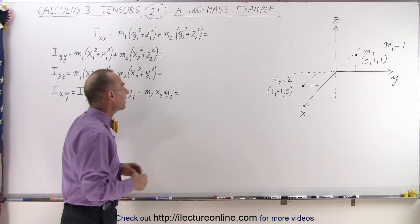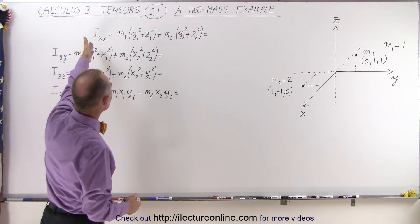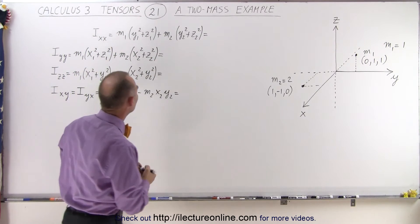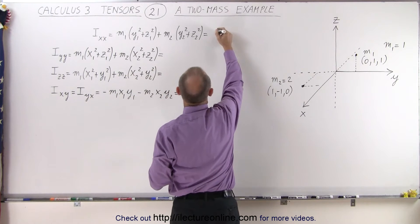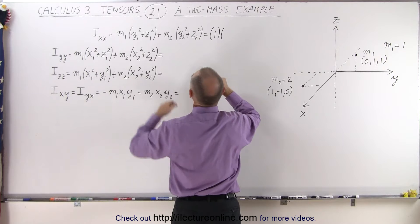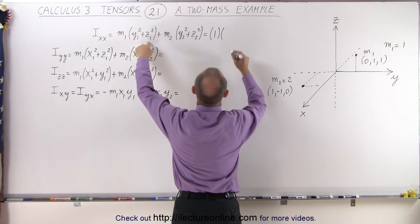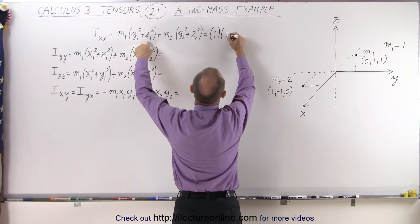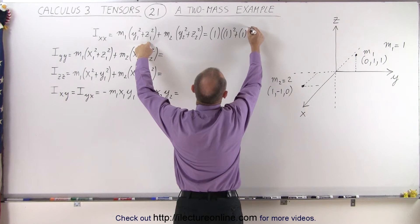So let's go ahead and start with the diagonal elements. Here we have Ixx, the two contributions of the two masses. So m1 equals 1 times y squared and z squared. Now y is 1, so we have 1 squared plus 1 squared.